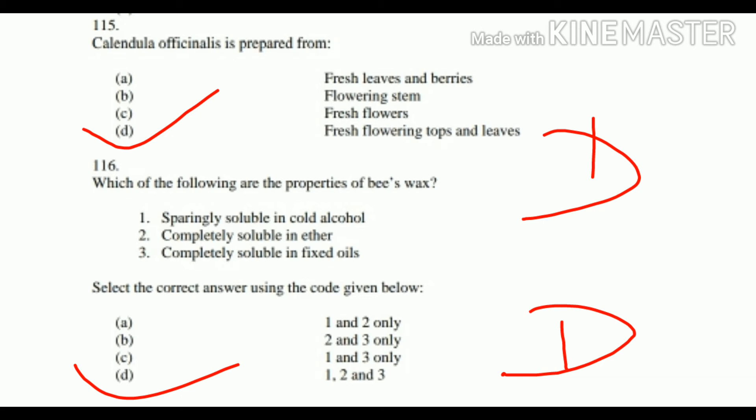Question number 116: Which of the following are the properties of beeswax? 1. Sparingly soluble in cold alcohol, 2. Completely soluble in ether, 3. Completely soluble in fixed oil. Select the correct answer using the code given below. All three statements are correct — Option D is right.